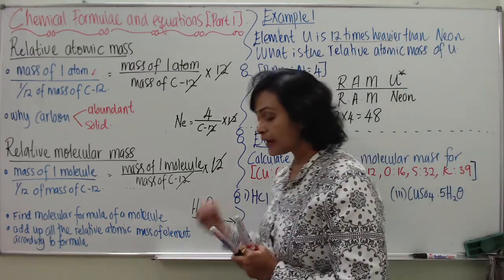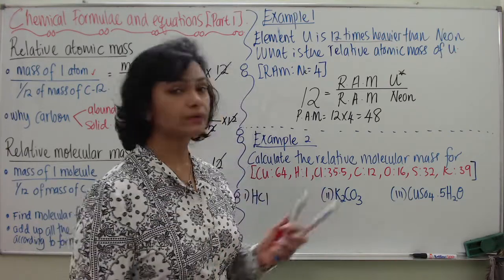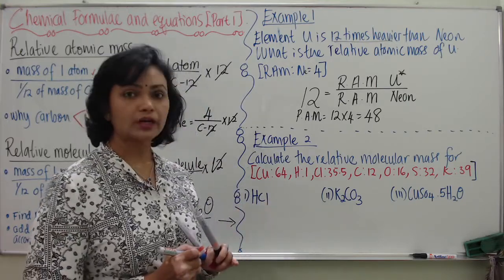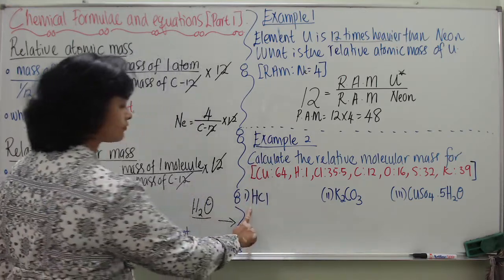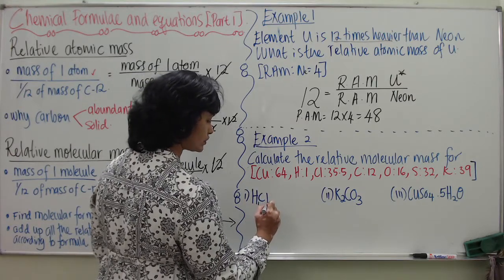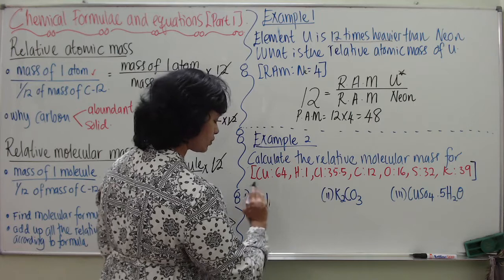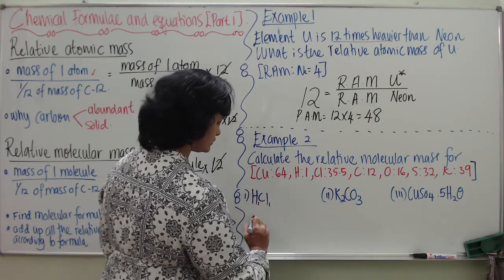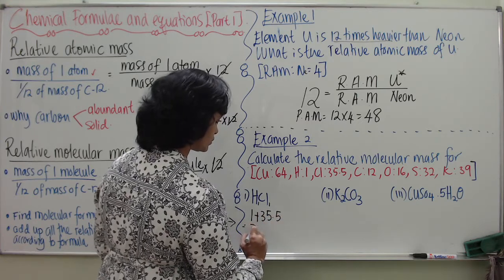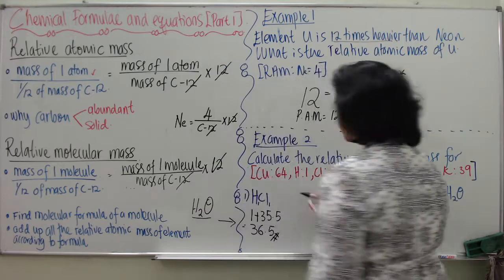Students can look at many examples and work them out after watching this video. First, you need the correct molecular formula. For HCl: there is one atom of hydrogen and one atom of chlorine, so the relative molecular mass of hydrogen chloride is 1 + 35.5 = 36.5. That is the relative molecular mass of HCl.